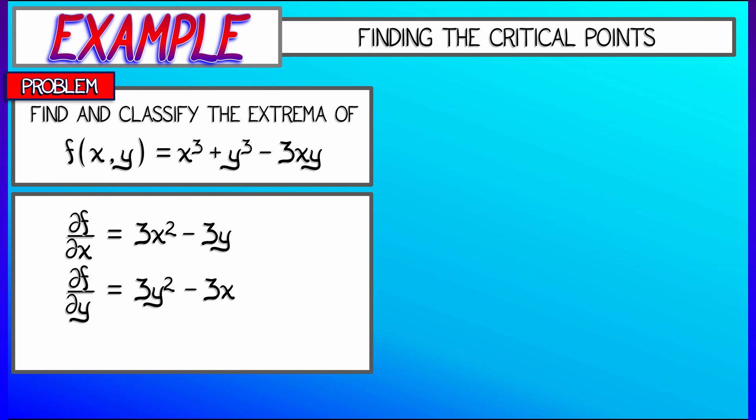Now, we set them both equal to zero. We have two equations, two unknowns. They're nonlinear, but you can solve them. Take a few moments and check on your own that the solutions are precisely 0, 0, which is kind of obvious, and the other solution is 1, 1. Check that that's all there is.